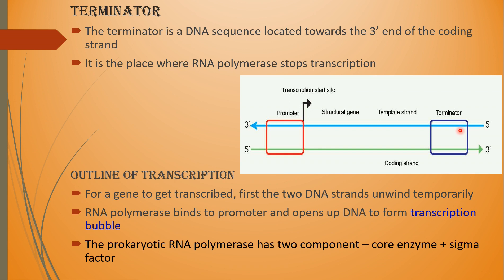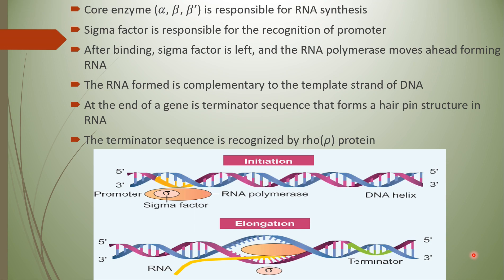The outline of transcription: for a gene to get transcribed, first the two DNA strands unwind and separate temporarily. The RNA polymerase enzyme binds to the promoter site, opens up the DNA, and separates the two strands — forming what is called a transcription bubble. In prokaryotes, RNA polymerase has two important components: the core enzyme and the sigma factor. The three steps in transcription are: initiation, elongation, and termination.